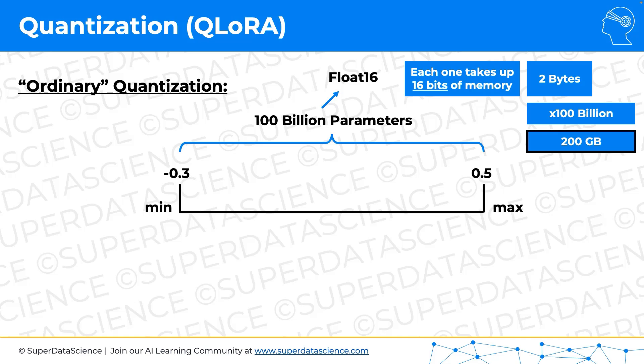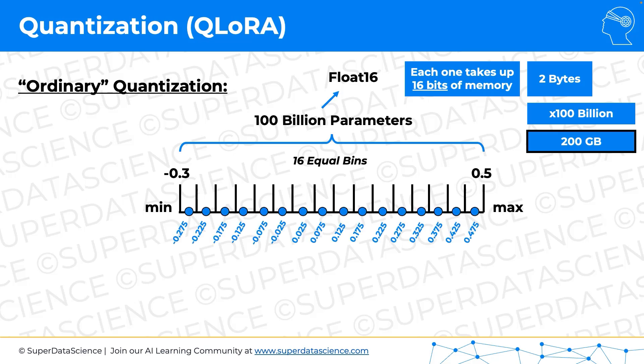What we're going to do is quantize them. For argument's sake, let's say the weights are between minus 0.3 and 0.5. We split this range into 16 equal bins, and each value — whatever bin a given parameter falls into — gets replaced with the midpoint of that bin. Rather than having 100 billion parameters anywhere between minus 0.3 and 0.5, we now still have 100 billion parameters but each one can only take one of these 16 different values. Instead of storing this in float16, we can get away with just four bits of data, because two to the power of four equals 16, and we have exactly 16 bins to codify.